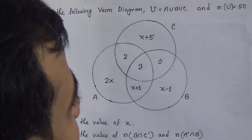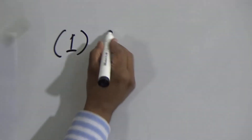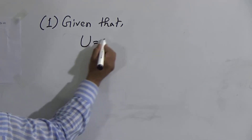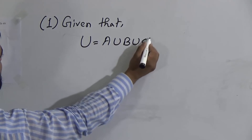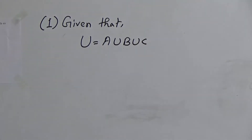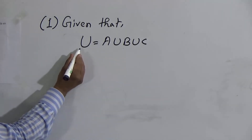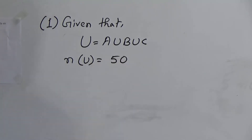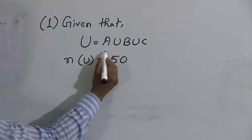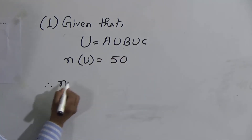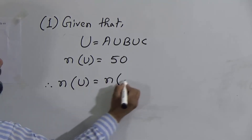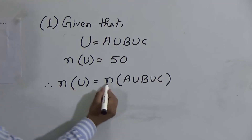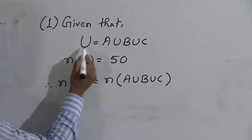Solution of activity 1, question number 19: given that U equals A union B union C. We need to find the value of X. So n(U) equals n(A∪B∪C), and n(U) is given as 50. Therefore, n(U) equals n(A∪B∪C) because U is defined as A union B union C.